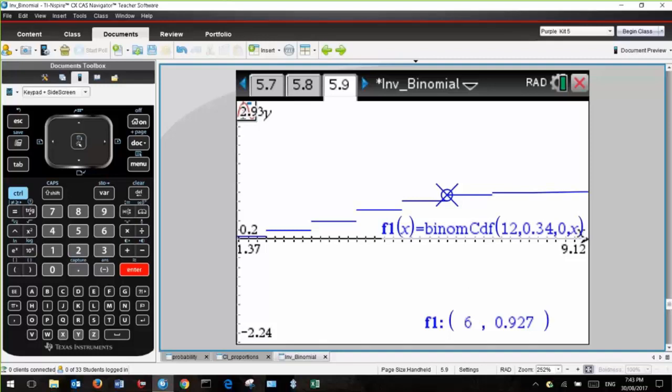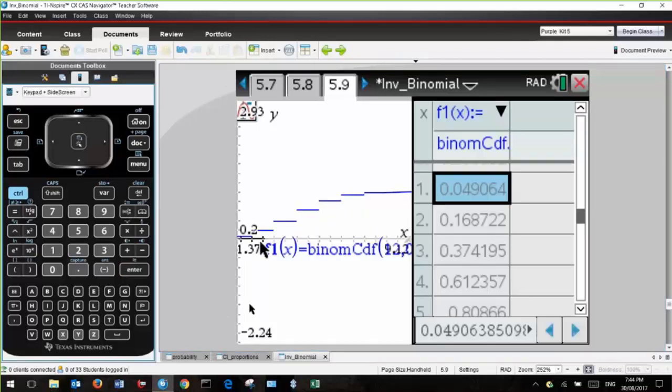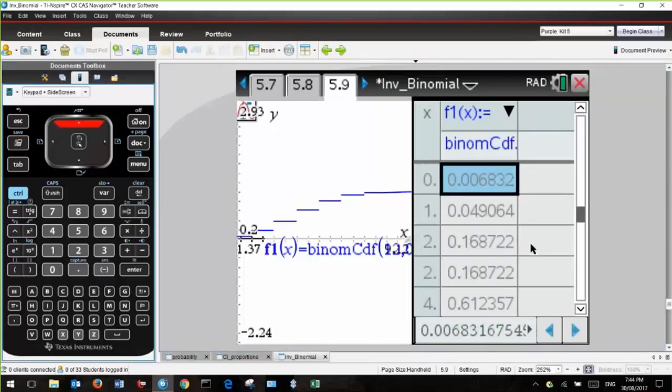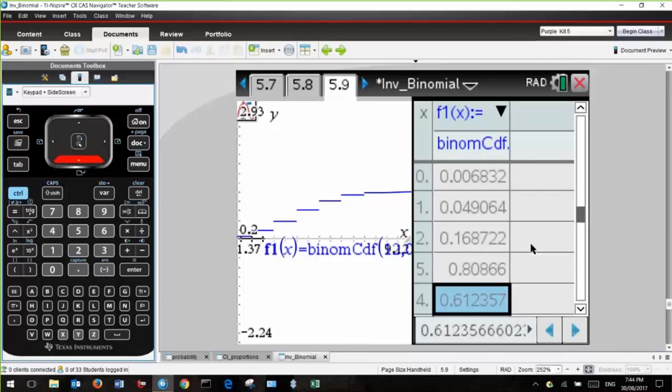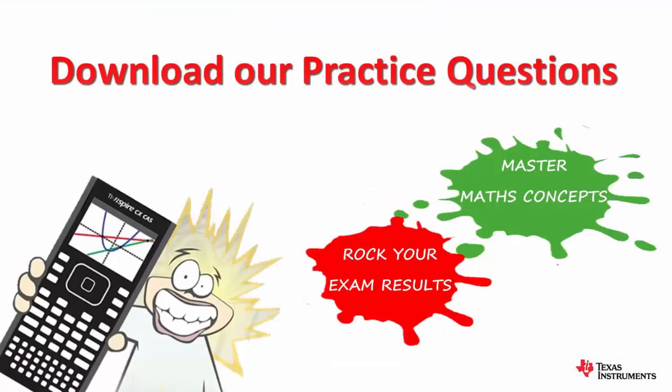If we instead press Control and T, then we get the table of values. That's for X equals 1, X equals 0. Of course, it's undefined for less than 0, and if we go through the table, we see that when X equals 6 is the first value which is below 0.95. Thank you.